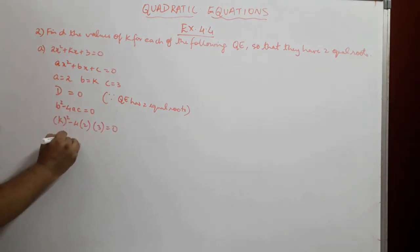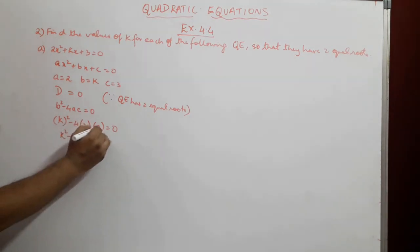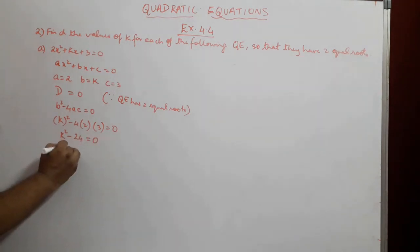So, k² - 4 × 2 is 8, 8 × 3 is 24. So, minus 24 = 0. k² can be written equal to 24.